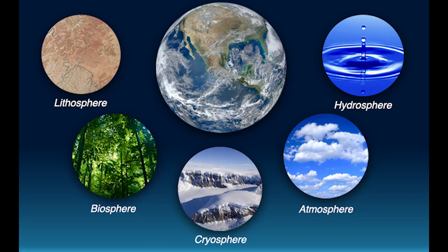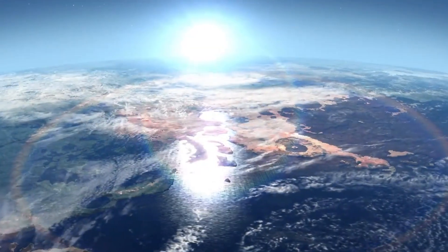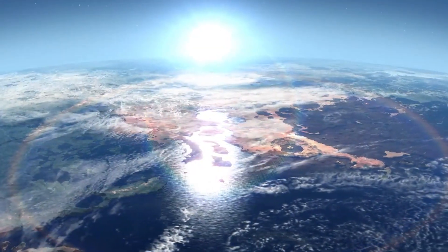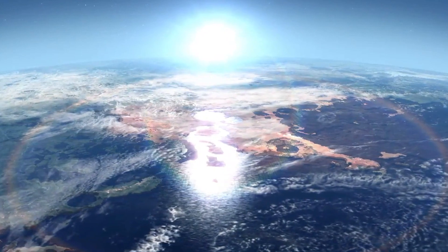We have the atmosphere, the hydrosphere, the cryosphere, the lithosphere, and the biosphere. All these spheres are in interaction to produce what we call our climatic systems.